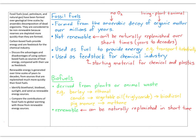Fossil fuels are formed from the anaerobic decay of organic matter over millions of years. Anaerobic means no oxygen — things buried underground or under the sea where there's not a large supply of oxygen. Organic matter is basically living matter from plants and animals, so coal and crude oil form from dead plants and animals buried with no oxygen. Fossil fuels are not renewable; they can't be naturally replenished over short timescales since it takes millions of years to convert dead organic matter into a fossil fuel.